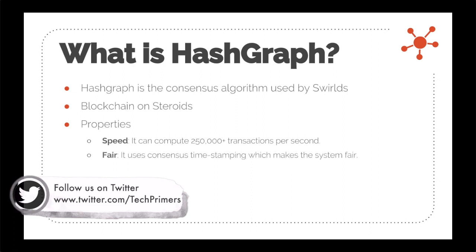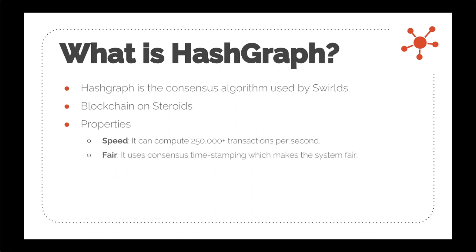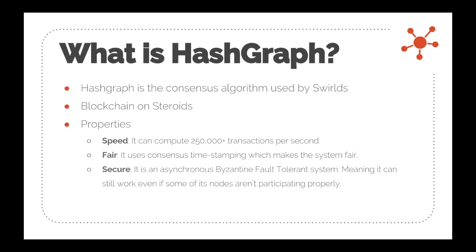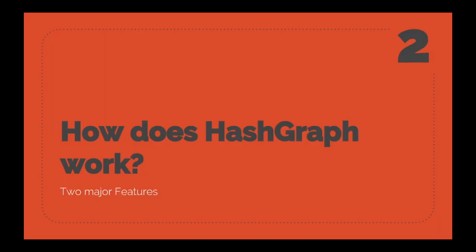The next property is fairness: hashgraph uses consensus timestamping, which makes the system fair. Finally, security: it is asynchronous and based on Byzantine fault tolerance, similar to how blockchain works. This means it can still function even if one of the nodes is not participating in the network.